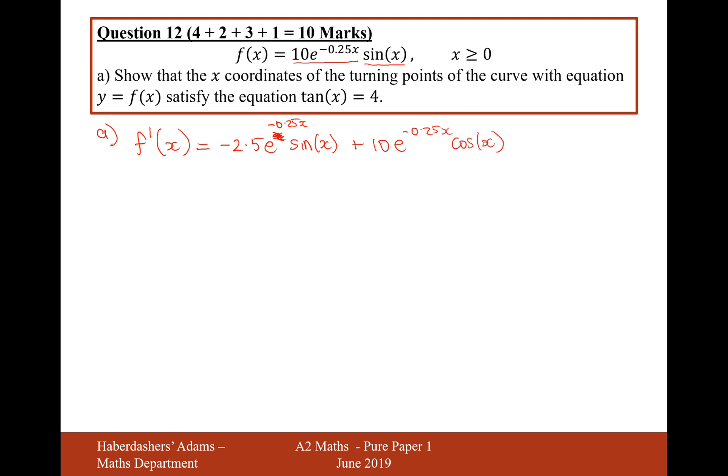We've differentiated the second part there, left the first part alone, and in the first part of the product rule, differentiated the first part, left the second part alone. And if we want a turning point, we set this thing equal to 0.